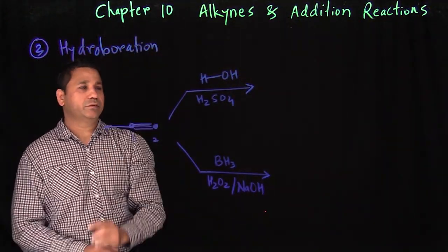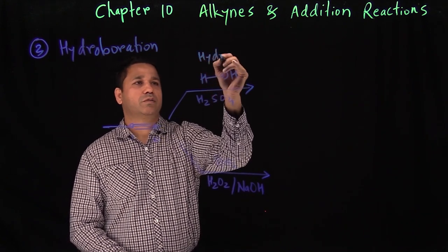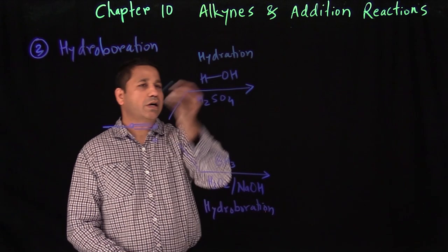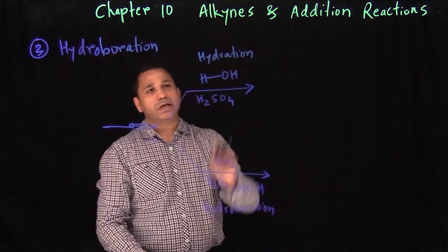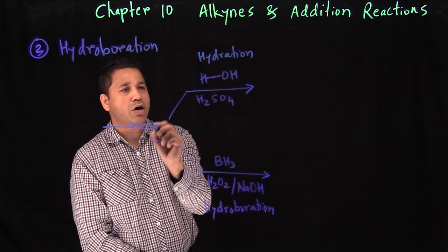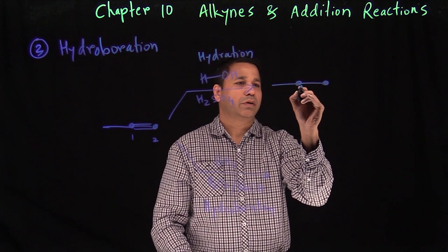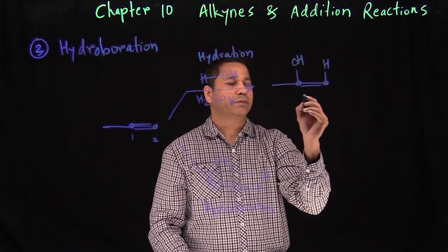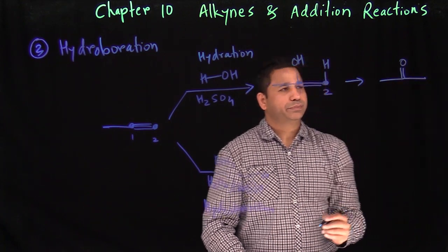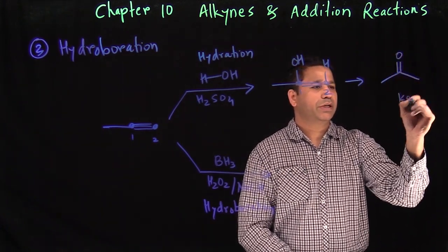The next reaction is hydroboration, which goes hand in hand with hydration. In hydration, following Markonikov's rule, H goes on carbon two and OH goes on carbon one. The enol formed then changes to the keto — that is your actual product.